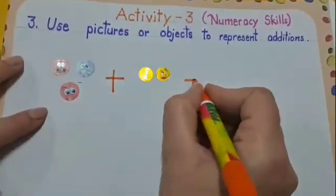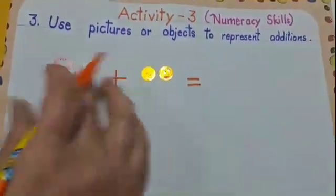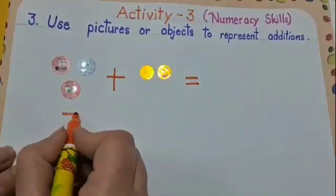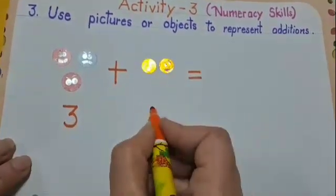One, two, three. First you count and write the number here. These are three. One, two. These are two.